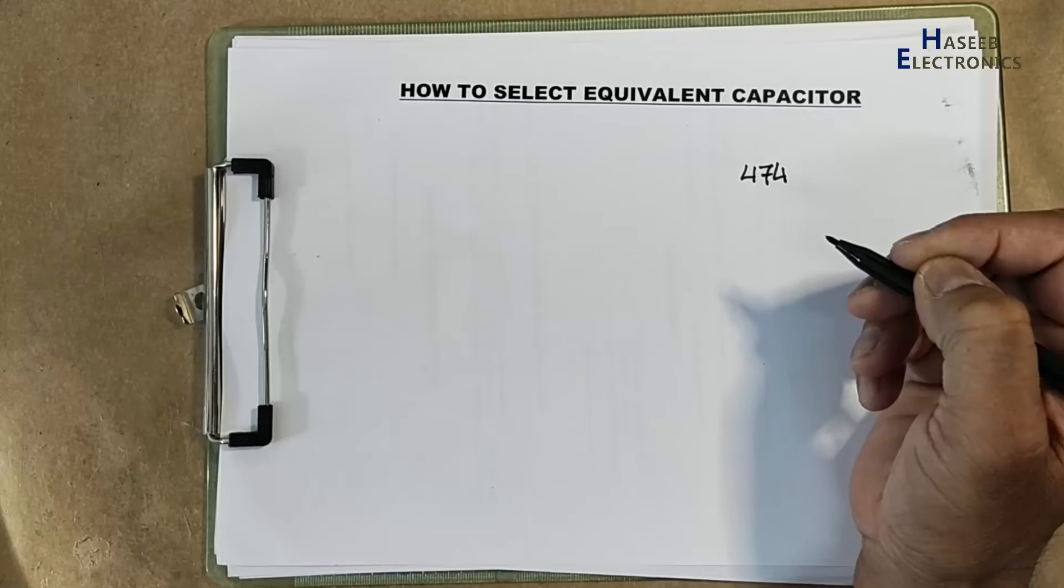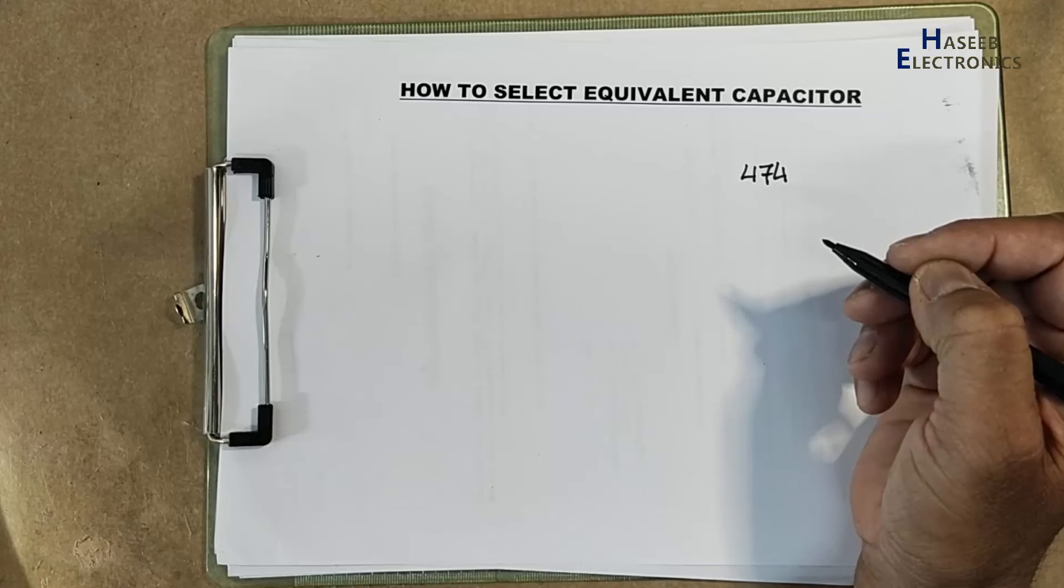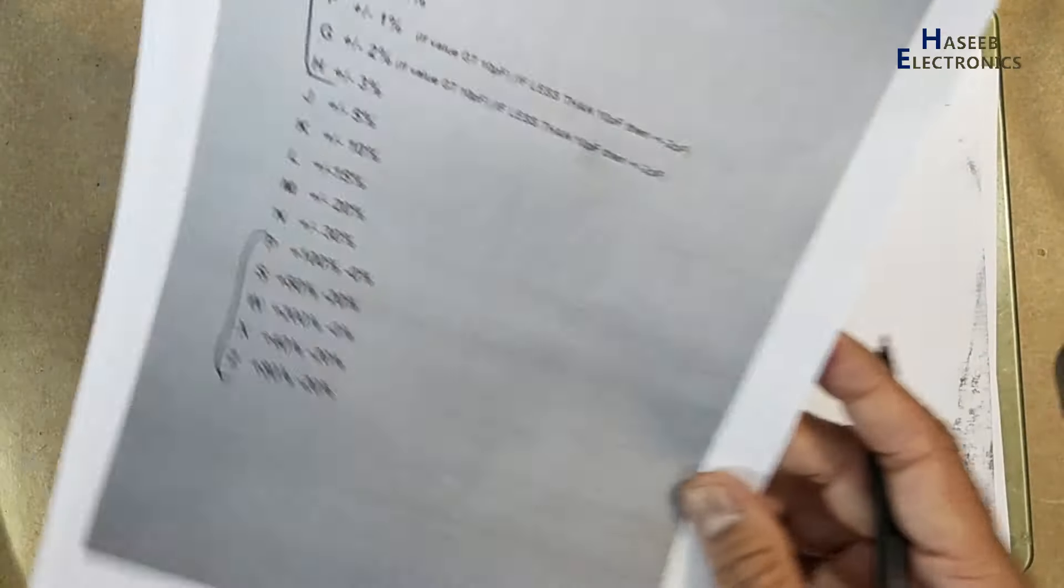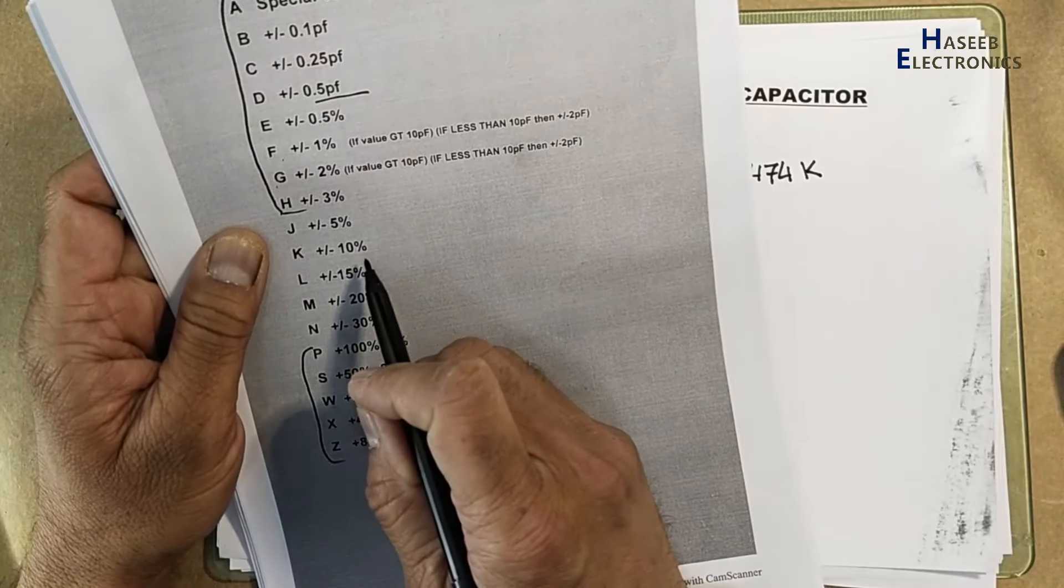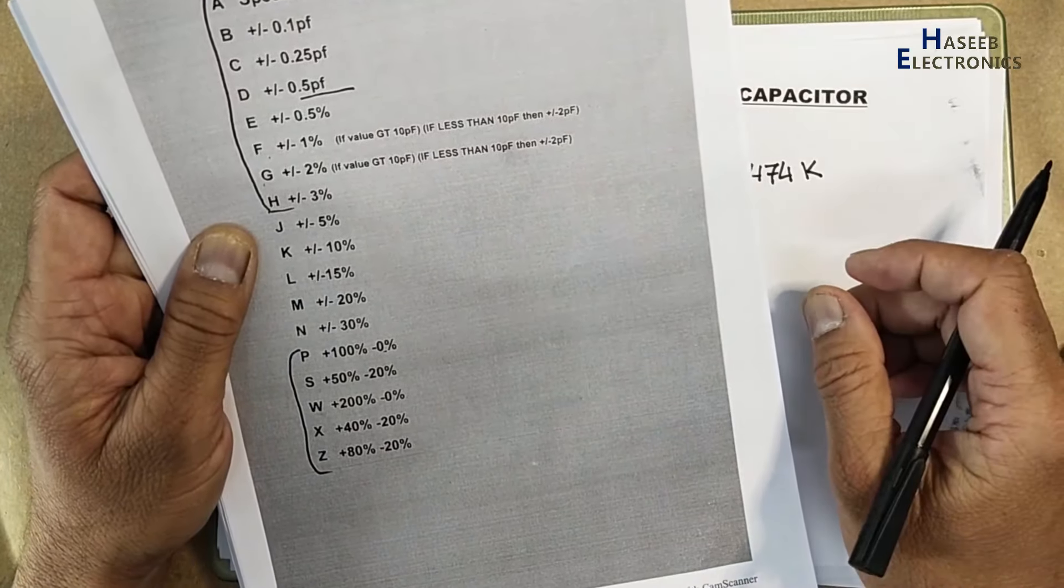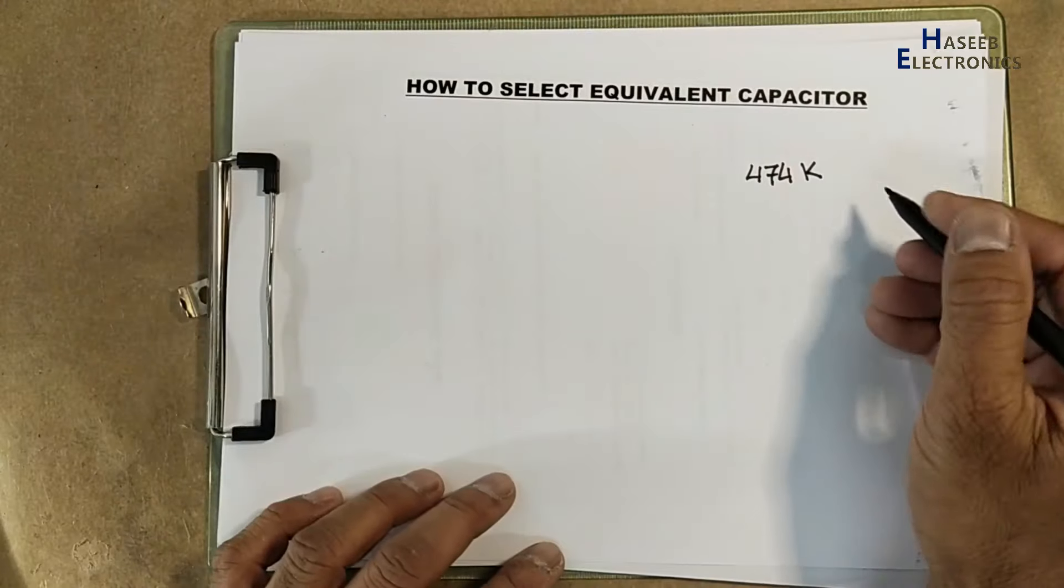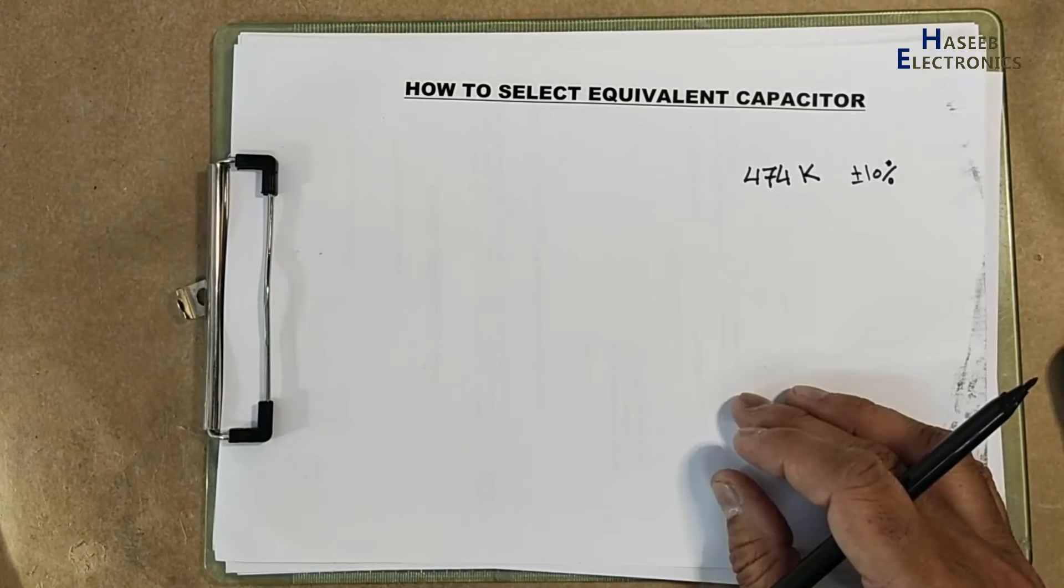474. When we see these capacitors 474, 474Z, 474K, for example, I want to check K. Verify its tolerance. K is plus minus 10 percent. Then check voltage value. Rated voltage K plus minus 10 percent. Note down the voltage value.